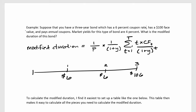In this example we've got a three-year bond that has a six percent coupon rate, a hundred dollar face value, and importantly it pays annual coupons. The market yield for this type of bond is four percent, and we're going to figure out what the modified duration of this bond is.